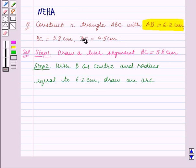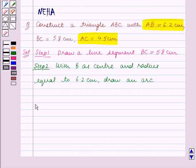Also, we are given that AC is equal to 4.5 cm. So in the third step, we will draw an arc of length 4.5 cm. Step 3 is, with C as center and radius equal to 4.5 cm.